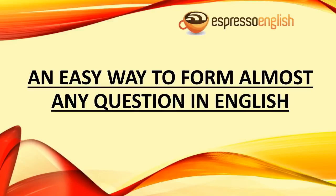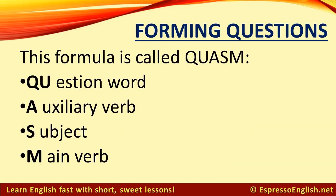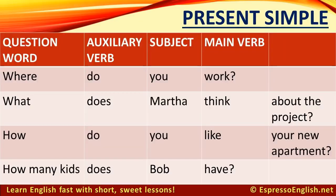An easy way to form almost any question in English, from EspressoEnglish.net. Forming questions in English can be confusing, but today I'm going to teach you a simple formula that works for asking questions in almost all the verb tenses. This formula is called QUASM: Question word, auxiliary verb, subject, main verb. Let's see how it works in the present simple.